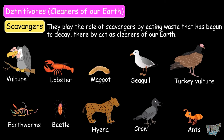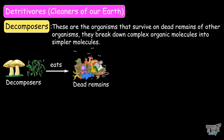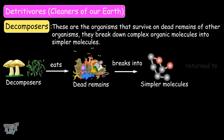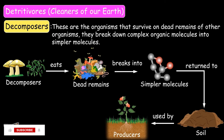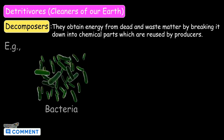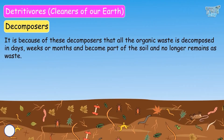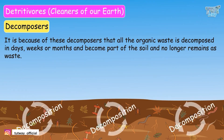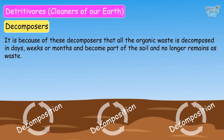The second type of detritivores are decomposers. Decomposers are the organisms that survive on dead remains of other organisms. They break down complex organic molecules into simpler molecules that are returned to the soil and are again used by autotrophs or the producers. In other words, decomposers obtain energy from dead and waste matter by breaking it down into chemical parts, which are used by producers. Examples of decomposers are bacteria and fungi. It is because of these decomposers that all the organic waste is decomposed in days, weeks, or months and becomes a part of the soil.